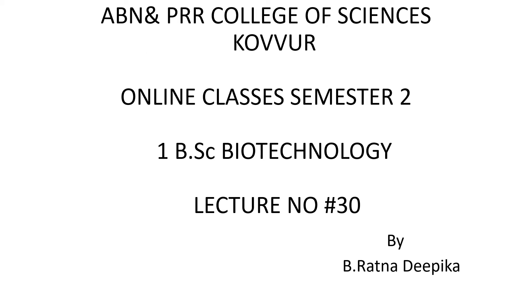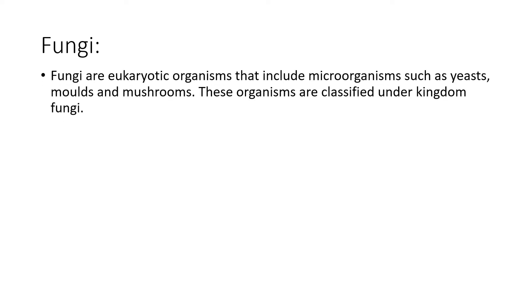Welcome to ABN and PRR College online classes. This session is for first BSc Biotechnology students. Today's topic is general characteristics of fungi and algae, from Unit 2. Fungi are eukaryotic organisms that include microorganisms such as yeast, molds, and mushrooms. These organisms are classified under Kingdom Fungi.